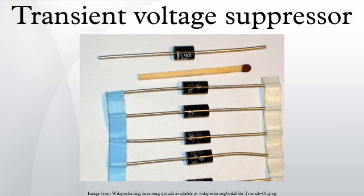The characteristic of a TVS requires that it respond to over-voltages faster than other common over-voltage protection components such as varistors or gas discharge tubes. This makes TVS devices useful for protection against very fast and often damaging voltage spikes.